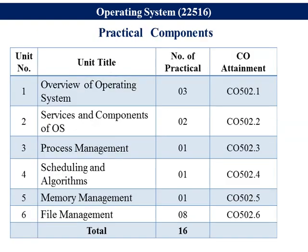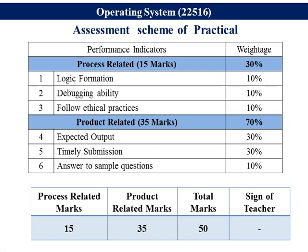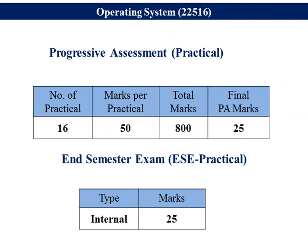For practical, there are three practicals for unit 1, two for unit 2, one each for units three, four, and five, and eight practicals are given for file management. So total 16 practicals, out of which one is beyond the syllabus that we have to perform. Here is the assessment scheme for practical: total marks for each experiment are 50, out of which 15 marks are process-related and 35 marks are product-related. So for 16 practicals we have total marks 800, which we have to convert into 25. That is, internal 25 marks will be given on the basis of the experiment performed and the output taken.